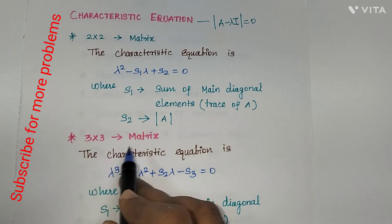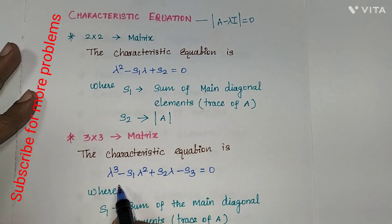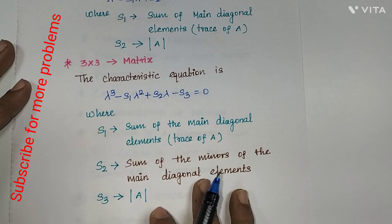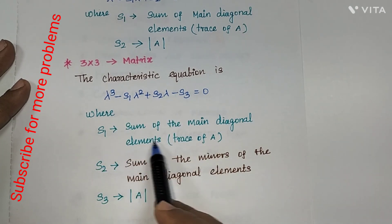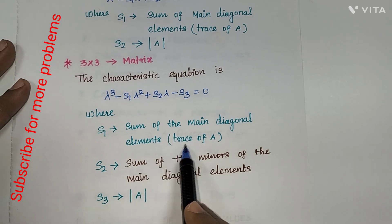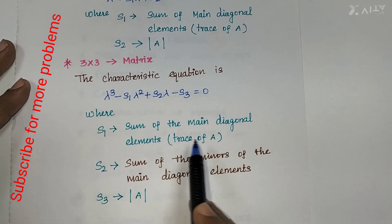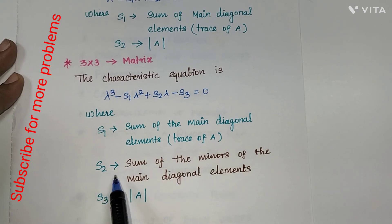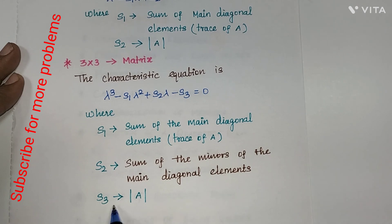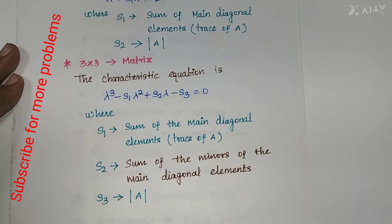One more model: for a 3×3 matrix, the characteristic equation is λ³ minus S1·λ² plus S2·λ minus S3 equals zero. Here we can find S1, S2, S3 based on these conditions. S1 is the sum of the main diagonal elements, also called the trace of A. S2 is the sum of the minors of the main diagonal elements — I will explain this in the problems. And S3 is the determinant of A, taken directly from the given matrix.